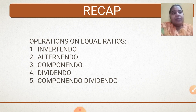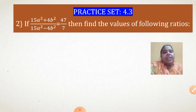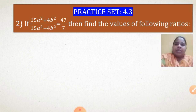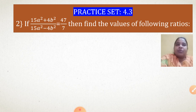Let us start further in the practice set which we have already started — that is Practice Set 4.3. Let us start with the second sum. The question is: 15a² + 4b² upon 15a² - 4b² is equal to 47 upon 7. Then find the values of the following ratios. This type of question has many sub-questions in it, so we will solve them one by one.